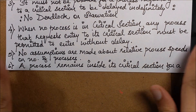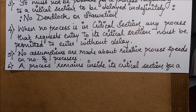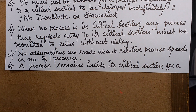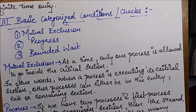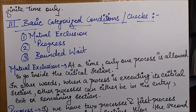When no process is in the critical section, any process that requires entry to the critical section must be permitted to enter without delay. No assumptions are made about relative process speeds or the number of processes. A process remains inside its critical section for a finite time only — every process is granted access to its critical section for a particular time quantum.